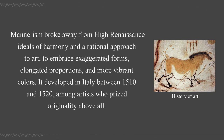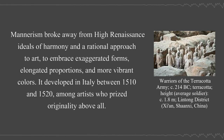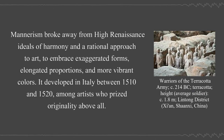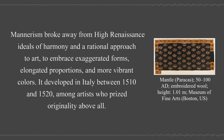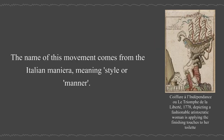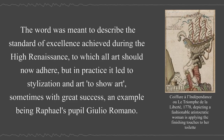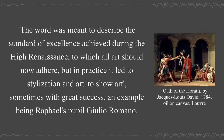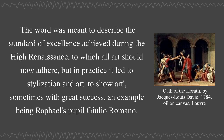Mannerism broke away from High Renaissance ideals of harmony and a rational approach to art to embrace exaggerated forms, elongated proportions, and more vibrant colors. It developed in Italy between 1510 and 1520, among artists who prized originality above all. The name of this movement comes from the Italian maniera, meaning style or manner. The word was meant to describe the standard of excellence achieved during the High Renaissance, but in practice it led to stylization and art to show art, sometimes with great success, an example being Raphael's pupil Giulio Romano.